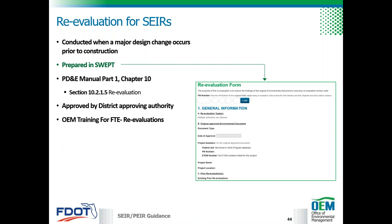Before heading on to the next lesson, let's briefly go over reevaluations for SEERs. Reevaluations are necessary for design changes resulting in new or additional impacts, which may require agency consultation or new public involvement, and for project changes due to changes in law, the passage of time, or changes in resource or issue status. When advancing to the right-of-way or construction phase, a reevaluation is needed if it's been longer than a year since approval of the SEER or the last reevaluation. Reevaluations are now prepared in SWEPT and approved by the District Approving Authority.